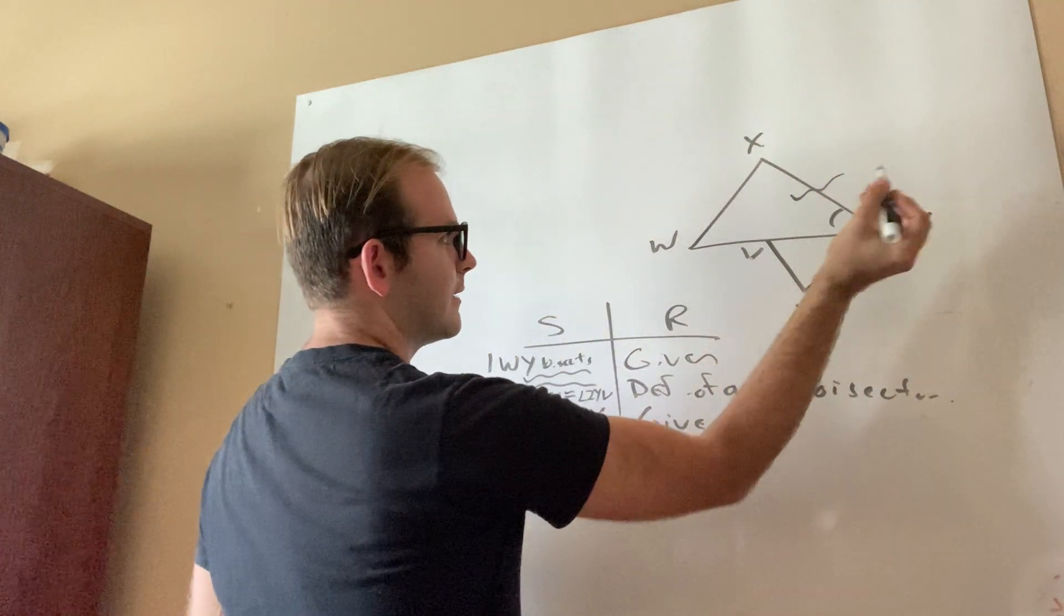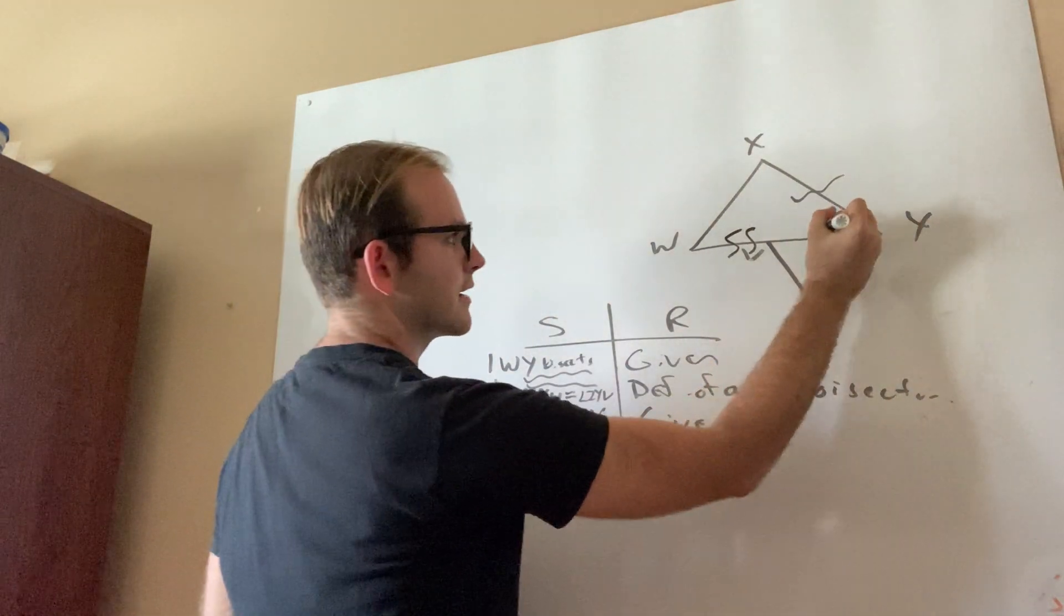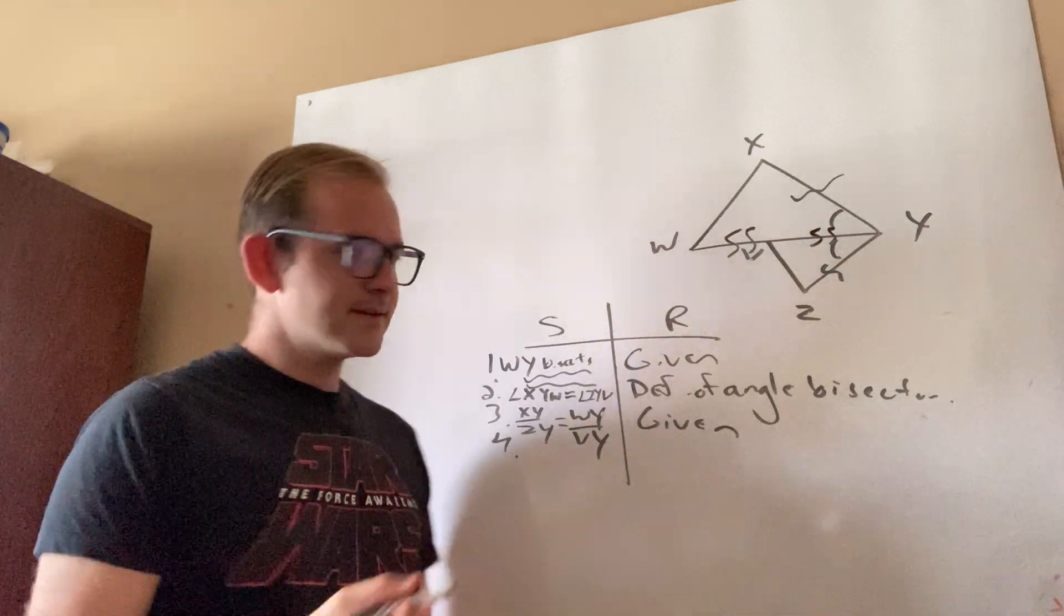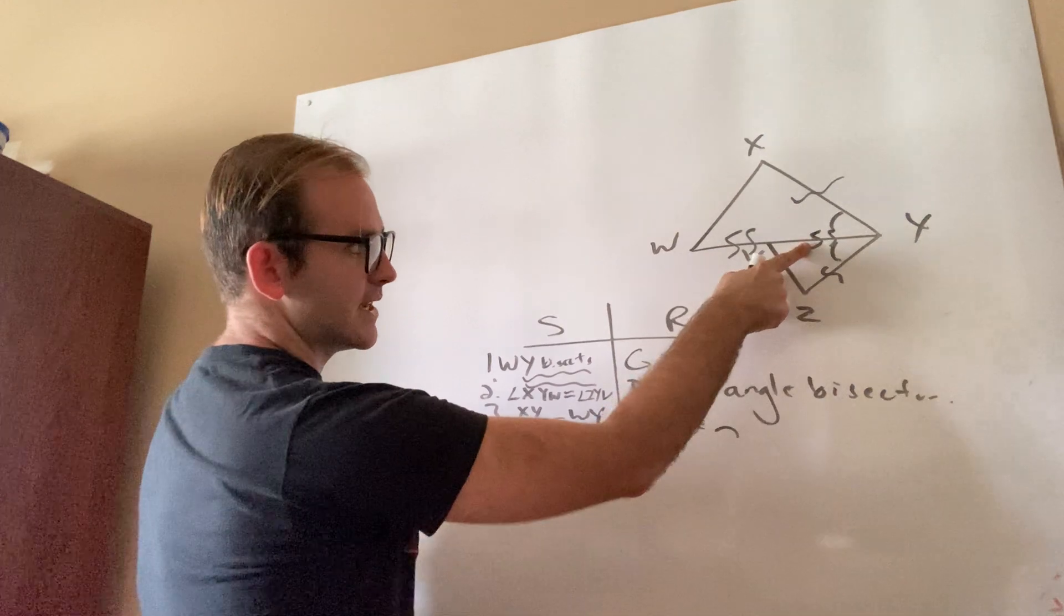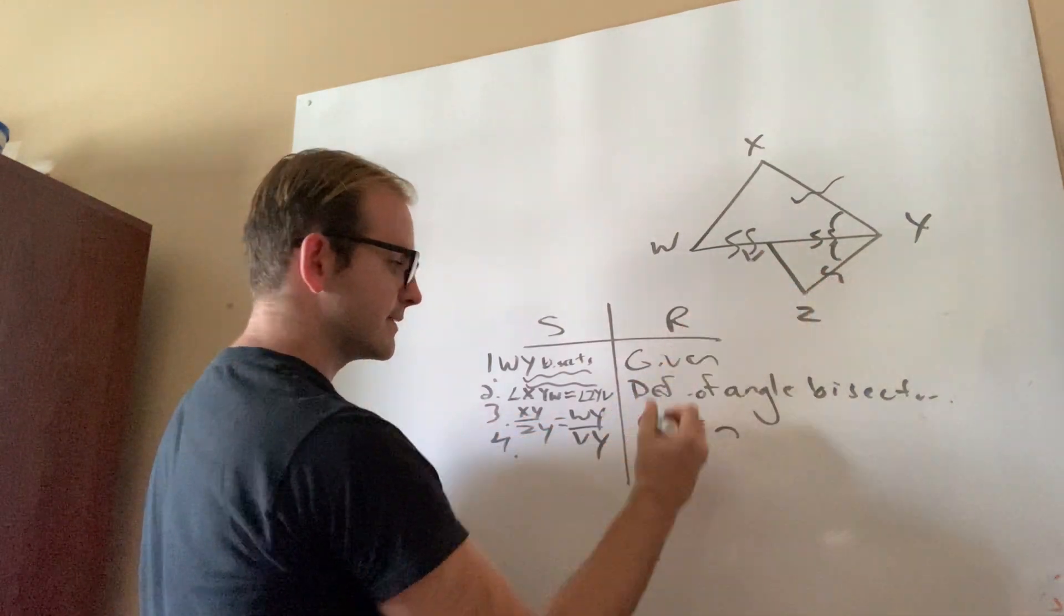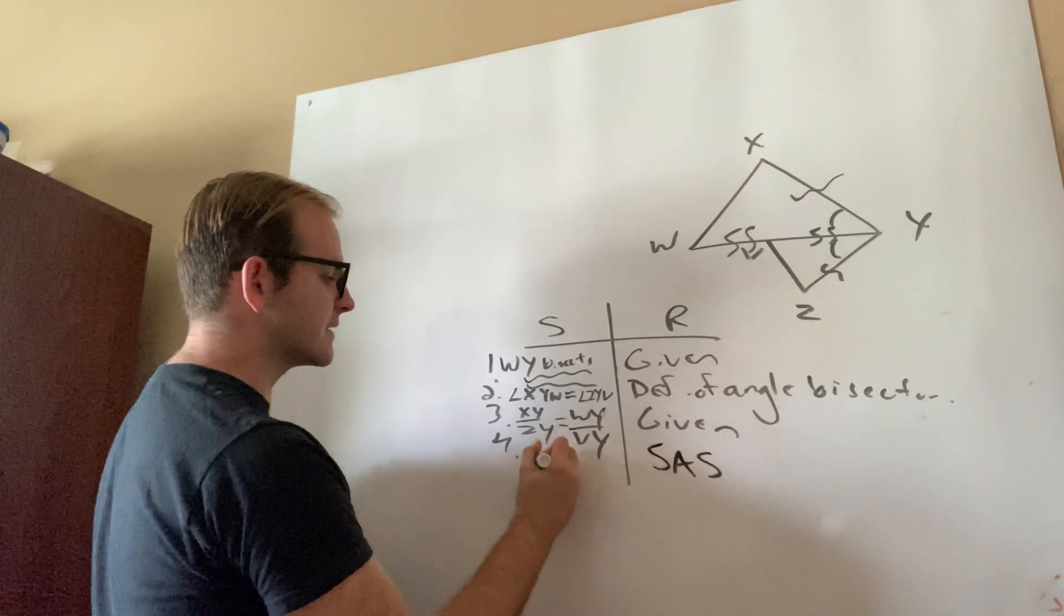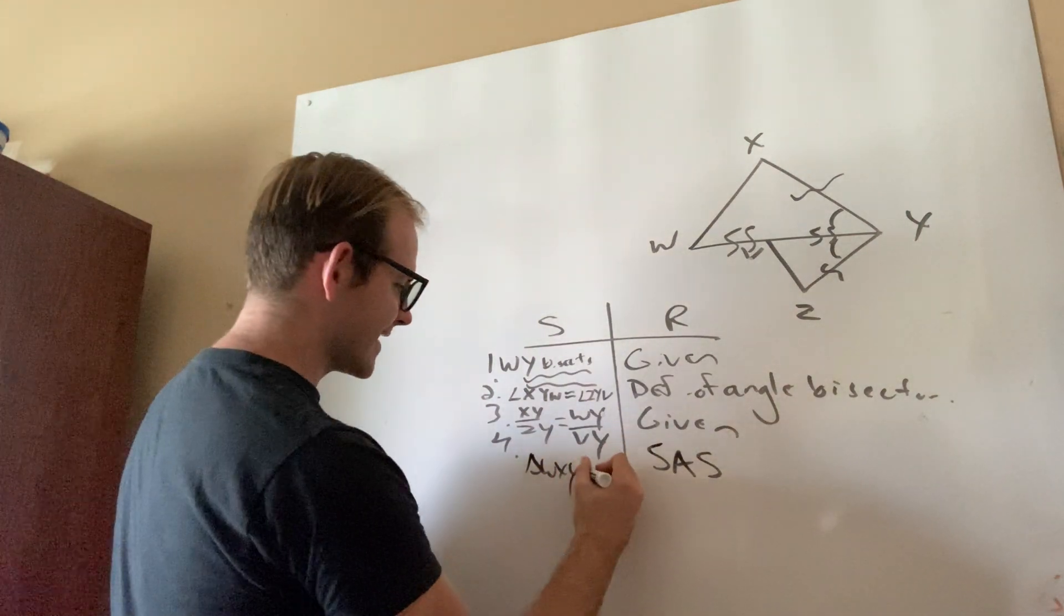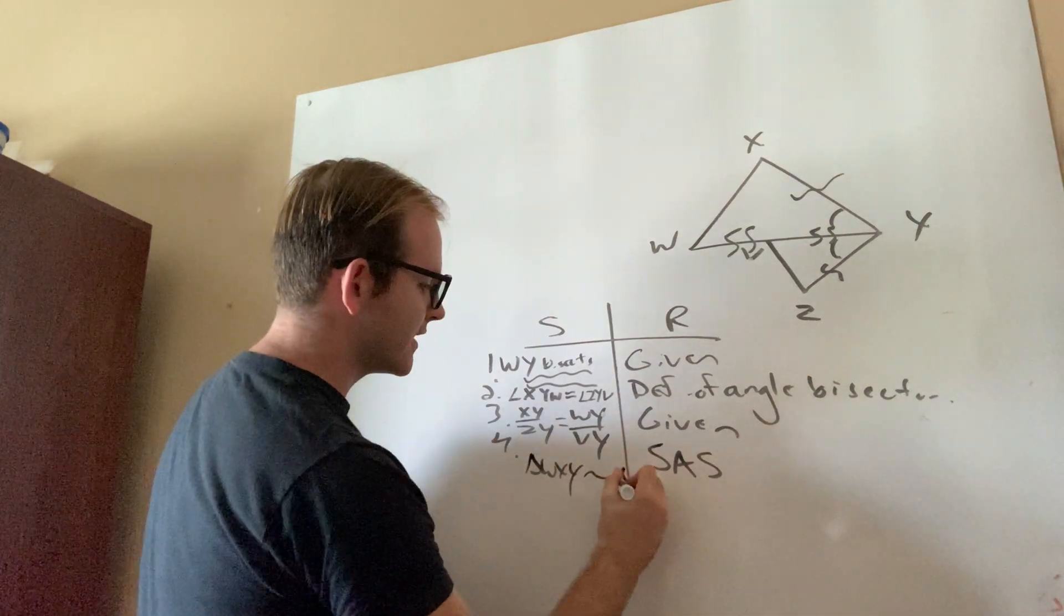I'm drawing a squiggle just because I don't want to confuse you and suggest they're the same like we did with congruence. But I want you to see that they're actually giving us a side pair. Same thing here. For WY, I'm going to do like two squiggles. And I'm going to do the same two squiggles for VY right over here. Now, the reason that's important, guys, is that now look at what I actually can see from my diagram. Side, followed by an angle, followed by a side. So that means that these two triangles are similar by side angle side similarity. And thus, I can actually just say triangle WXY is similar to triangle VZY.